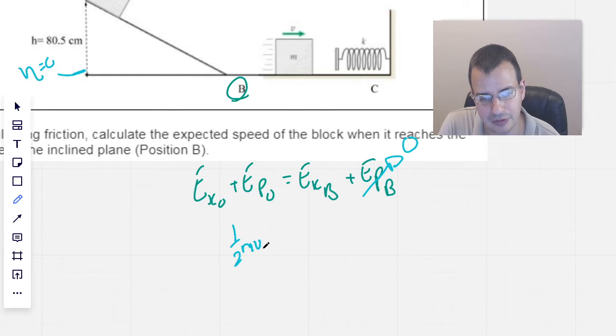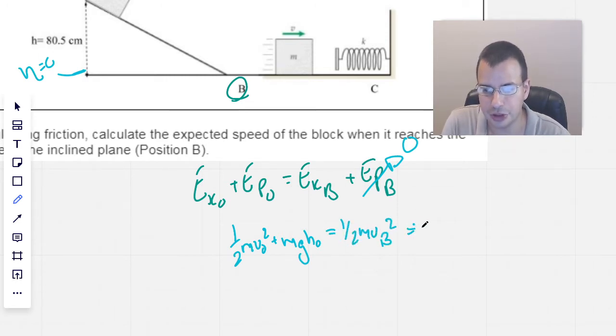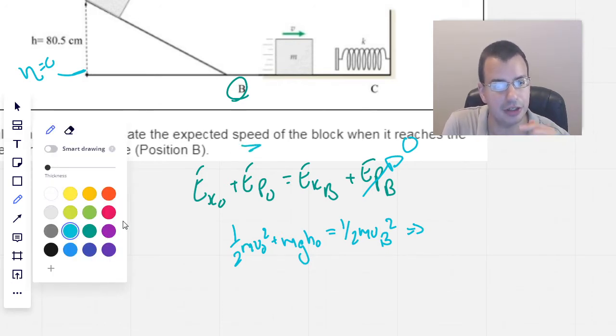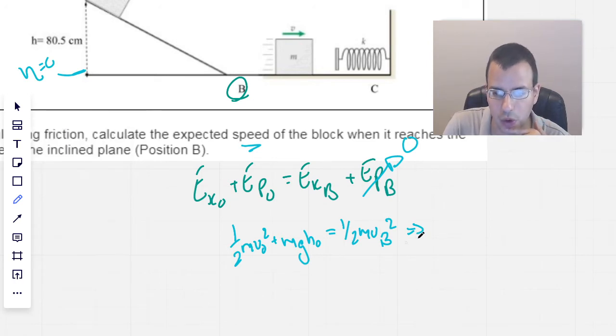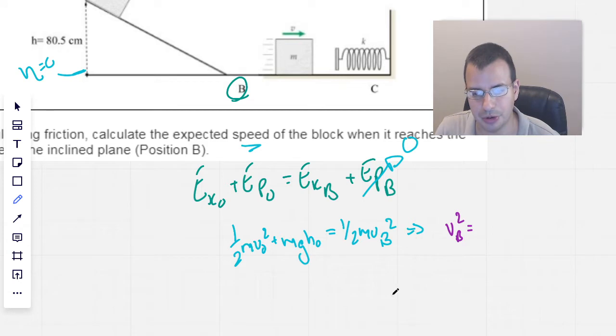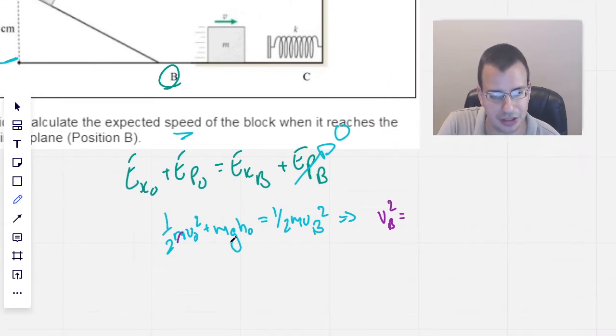So we have 1/2 m v initial squared plus mass times gravity times height initial equals 1/2 m v_B squared. So solving this for the speed of the block at position B, neglecting friction, we're going to be left with v at B squared equals, multiply everything by 2, cancel the masses.